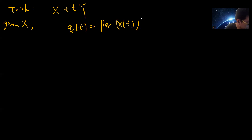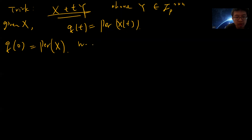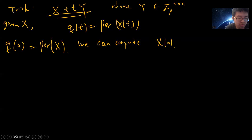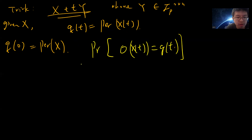The trick is the same: given x, we compute x(t) = x + tY, and define q(t) to be the permanent of x(t). We choose Y uniformly at random over the prime field. Note that q(0) is just the permanent of x. The theorem tells us that for every non-zero t, the probability over x(t) that the oracle O equals q(t) is greater or equal to 3 divided by 4 plus delta.